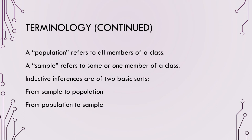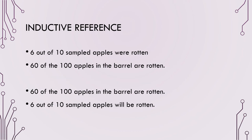In addition to conjunctive and disjunctive probabilities, it's important to note basic terminology for inductive arguments. Inductive arguments are amplitative, meaning we often talk about populations and samples — referencing from sample to population and from population to sample. For instance, if I have 100 apples in a barrel and 60 of the 100 are rotten, then out of 10 apples sampled, 6 should be rotten. We can move from sample to population or population to sample; in either case, we are making inductive reference.